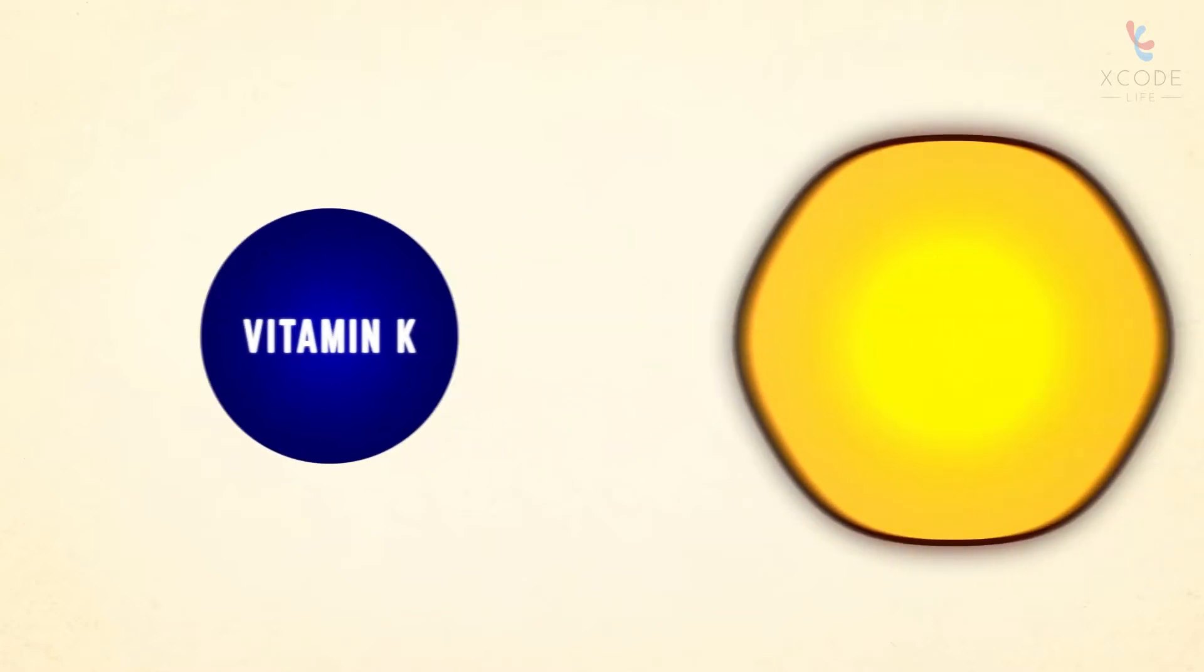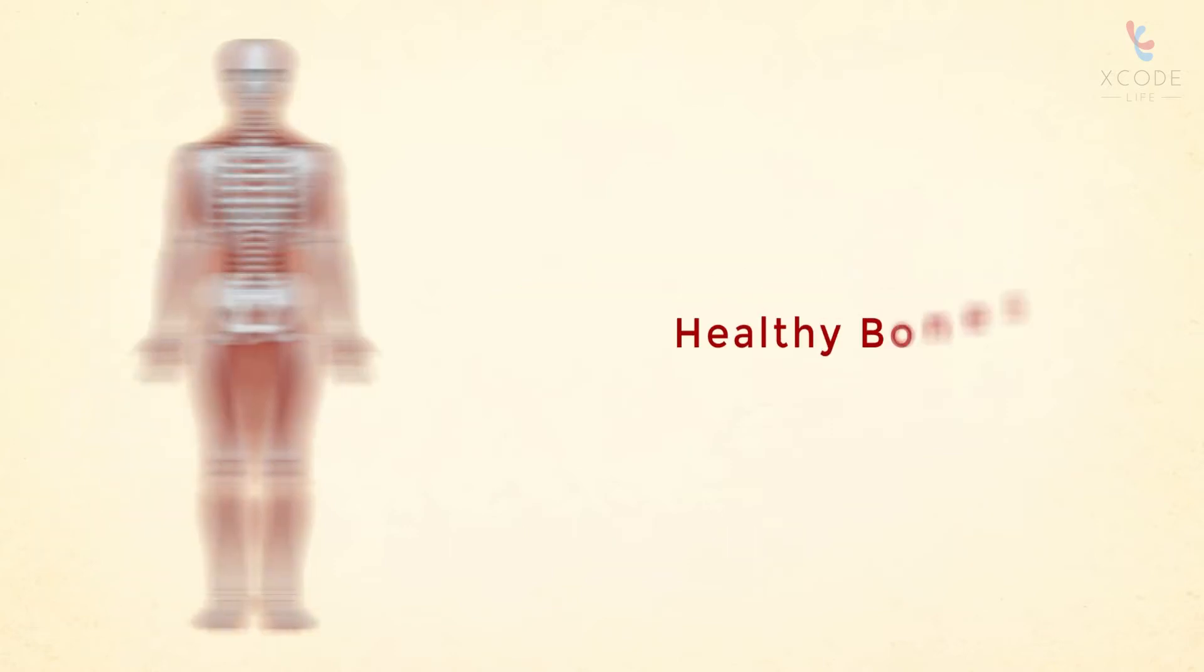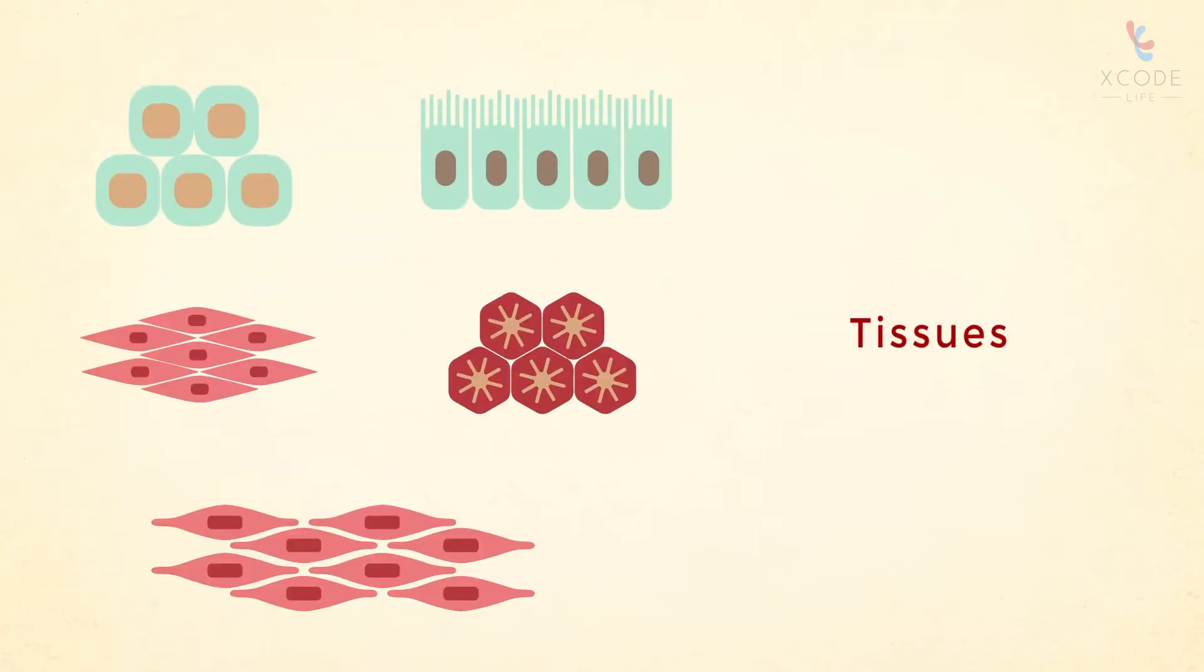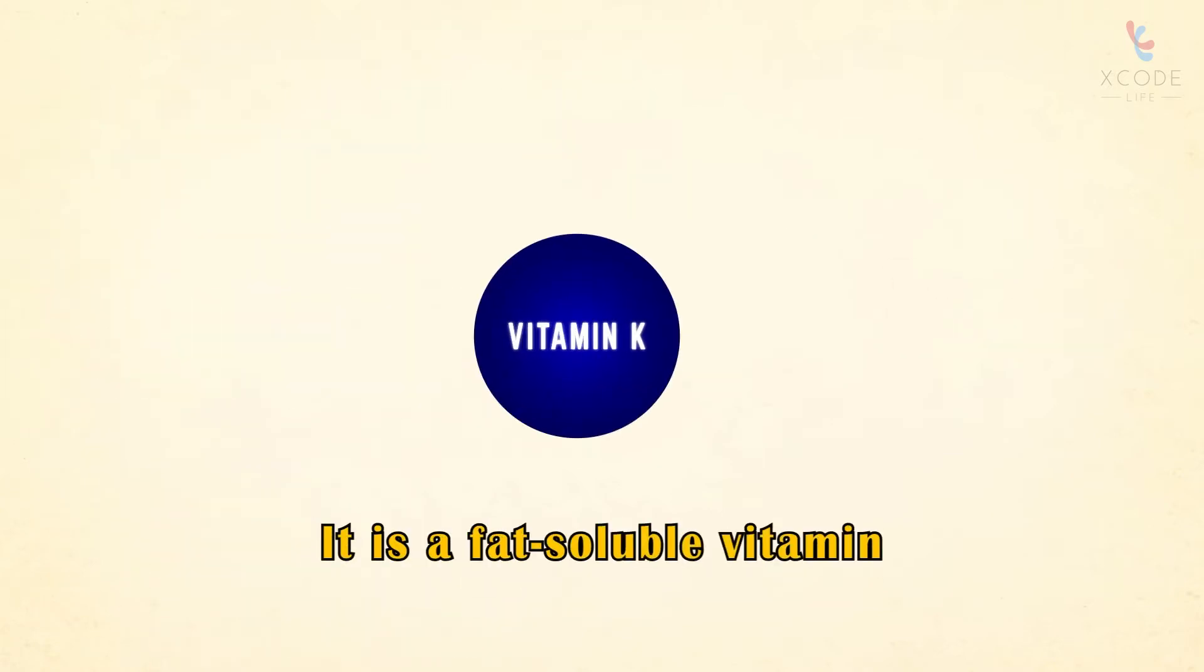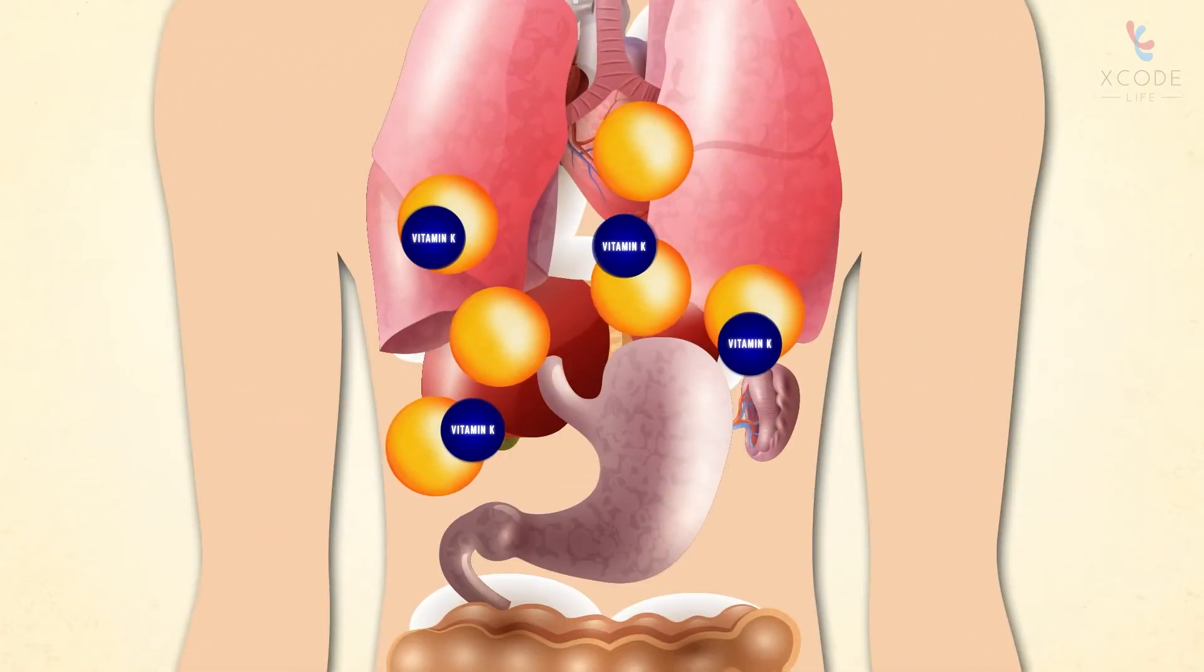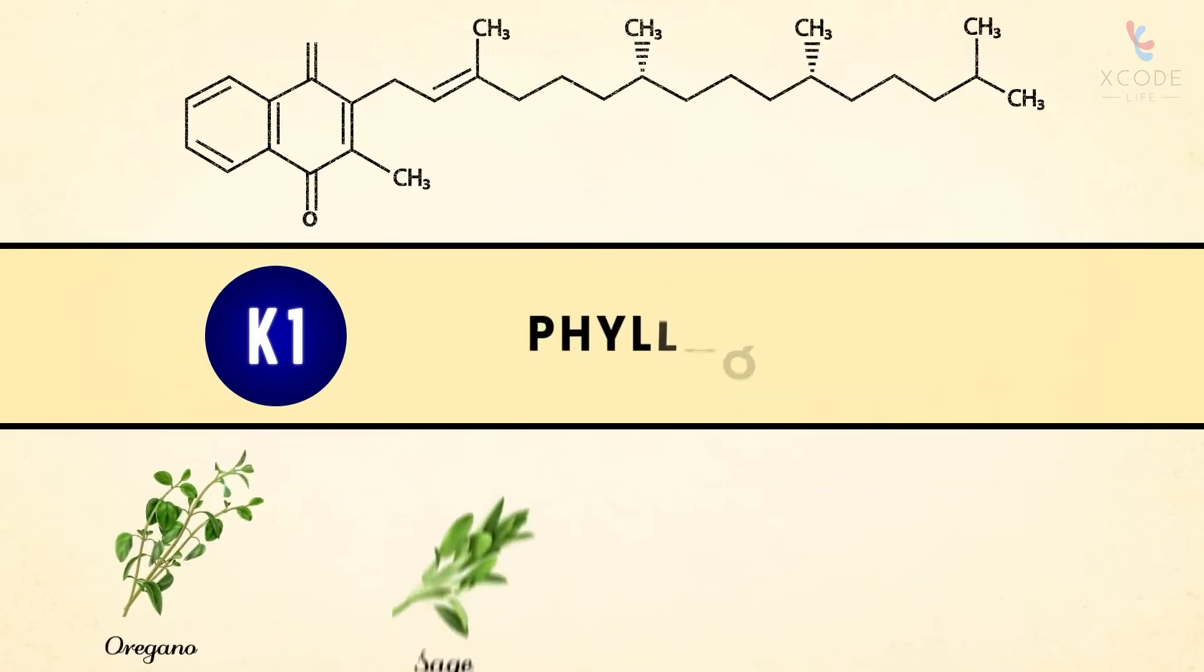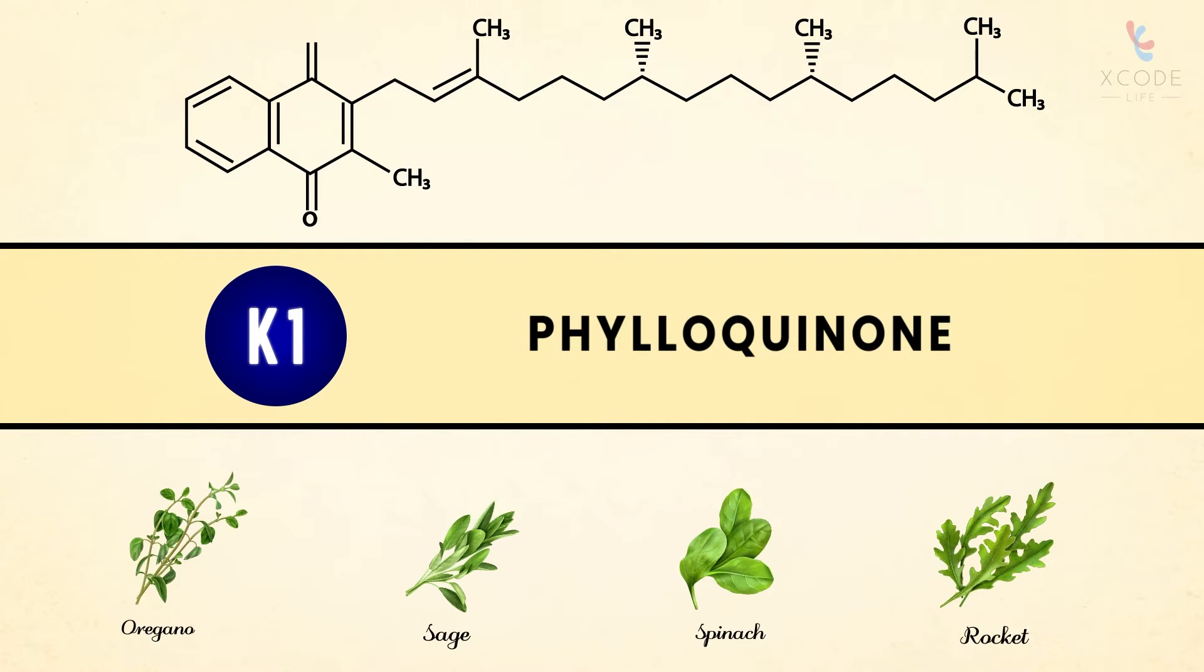Vitamin K is a nutrient required for the production of proteins important for blood clotting, healthy bones, and tissues. It is a fat-soluble vitamin, meaning it is absorbed and transported in the body with fat molecules. Vitamin K comes in three forms. K1, also called phylloquinone, is produced by plants and is the main type of vitamin K in our diet.